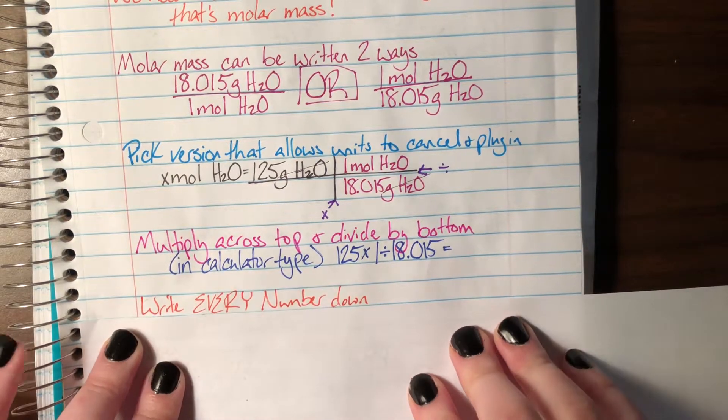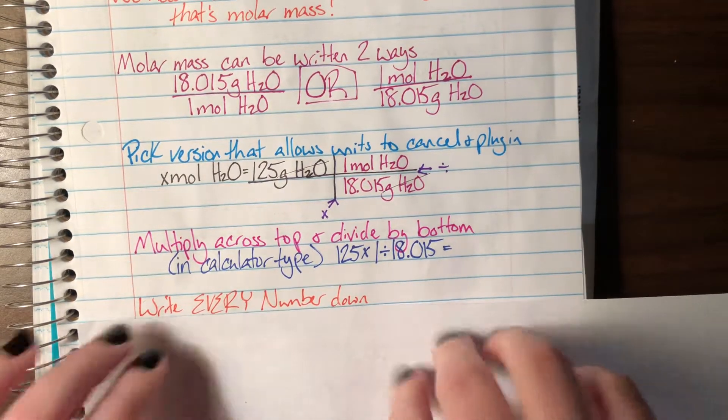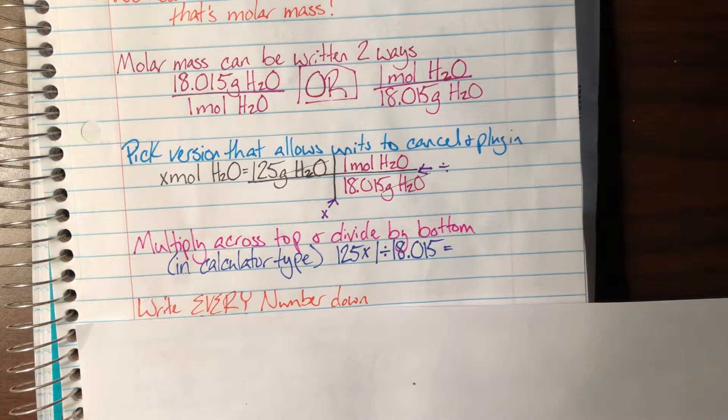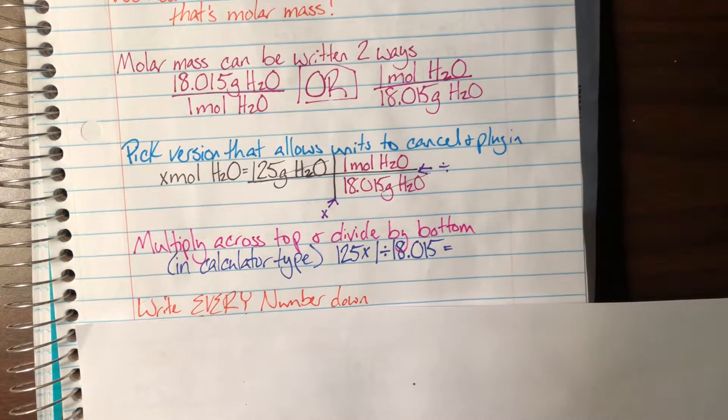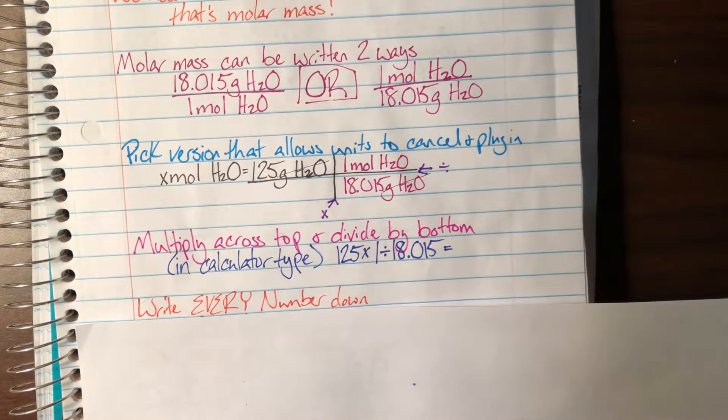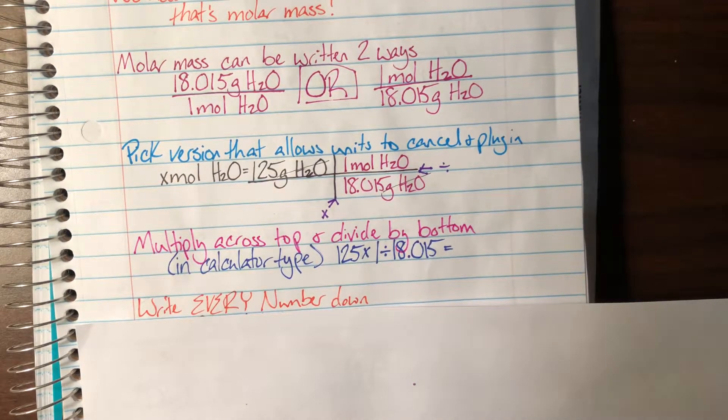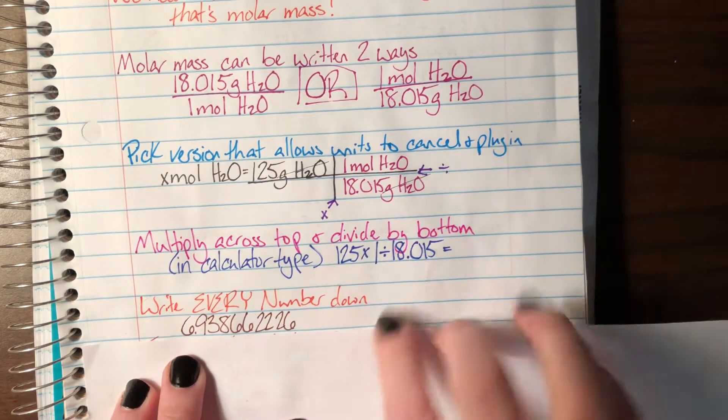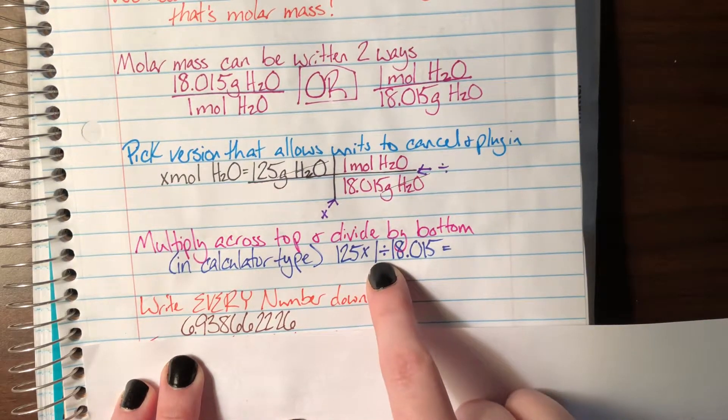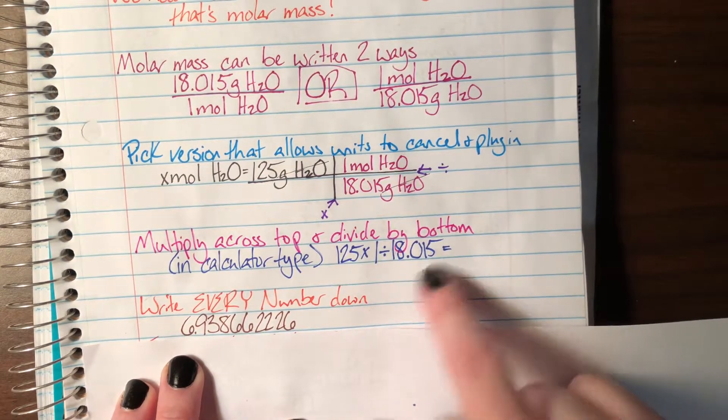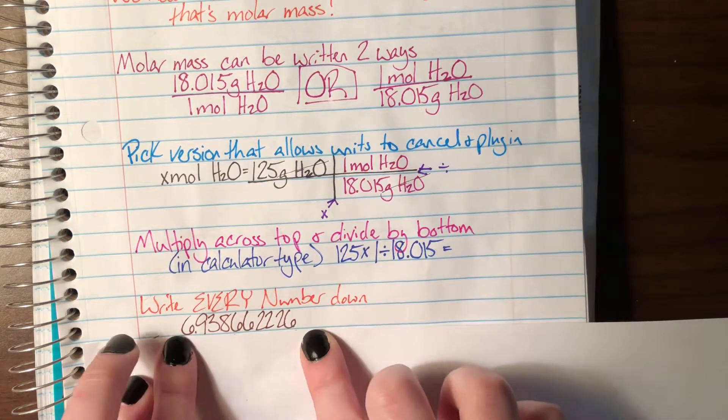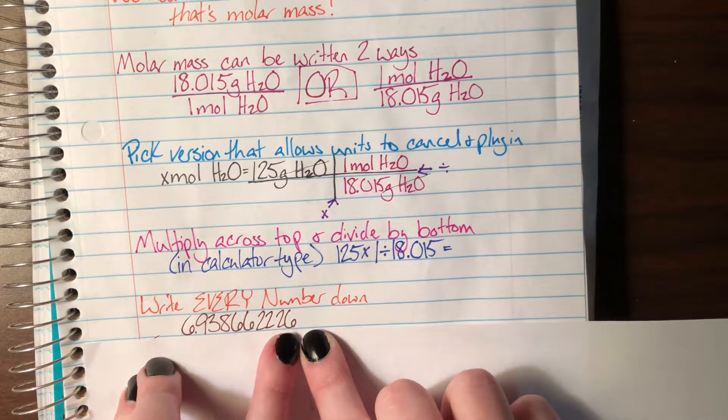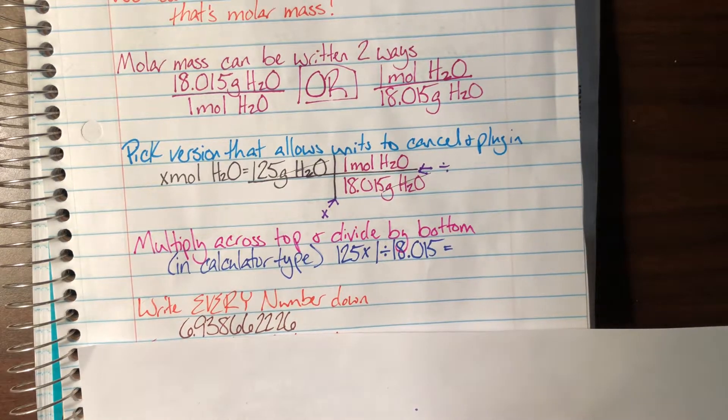So I have that, and once I actually plug that into the calculator and get a value, I'm going to write out every single number that comes out of that calculator. This ensures that if, in the end, I get the problem wrong, I can go back and check to see, did I just forget how to round, or did I actually do the problem wrong and I need help? The number that comes out of the calculator when I plugged 125 times 1 divided by 18.015 was this number, 6.938662226. It's not a very nice number.